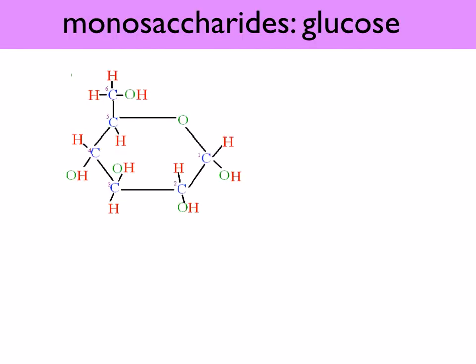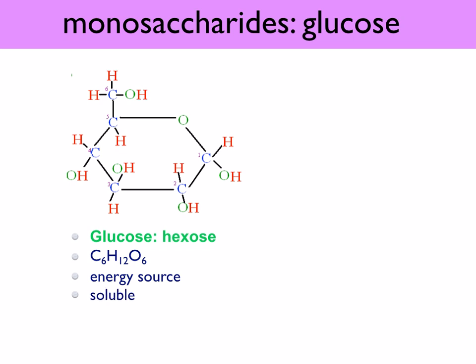Glucose is an abundant and very important monosaccharide. It contains six carbons, so it's a hexose sugar. Its general formula is C6H12O6. Glucose is the major energy source for most cells. It's highly soluble and is the main form in which carbohydrates are transported around the body of animals.